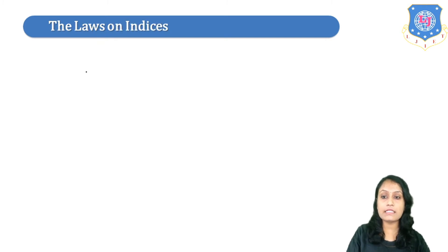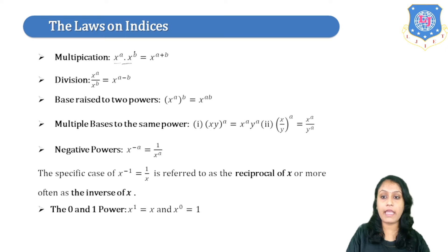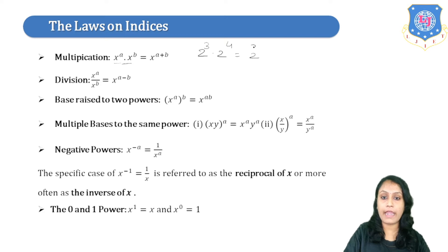Now let's study the laws of Indices. The first one is multiplication: x raised to a into x raised to b will give you x raised to a plus b. So if we have a base in common, we can add the powers. For example, 2 raised to 3 into 2 raised to 4 — the base is the same, so we can add the powers, giving you 2 raised to 7.